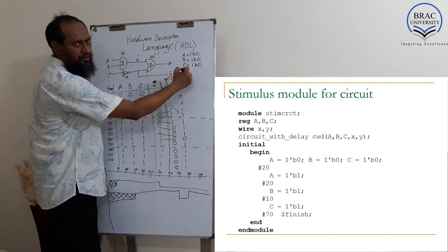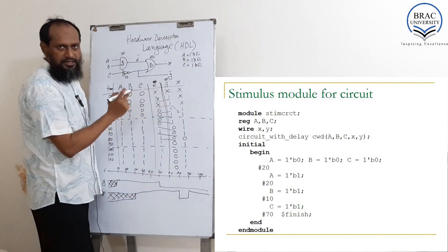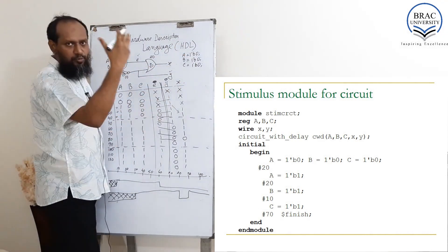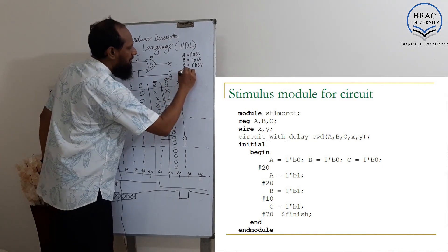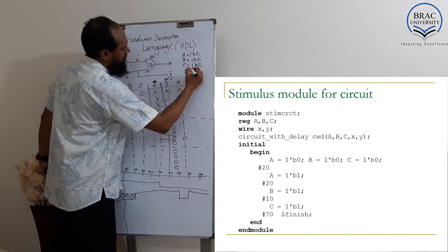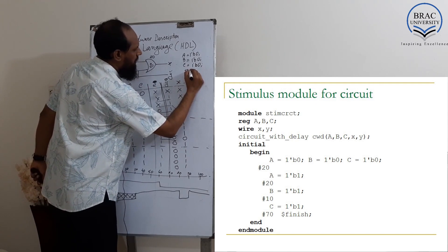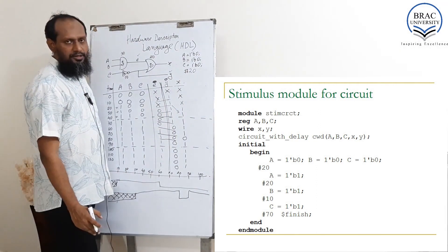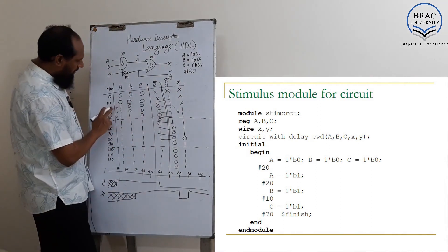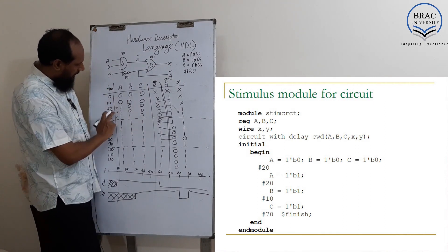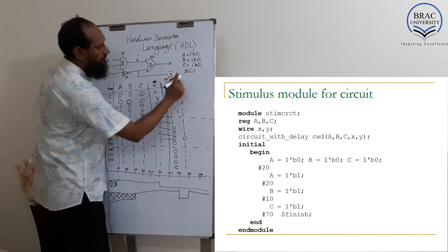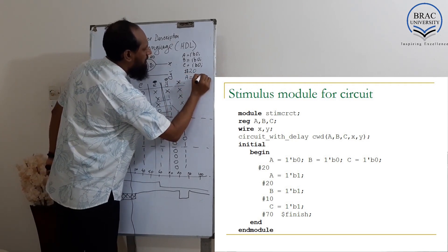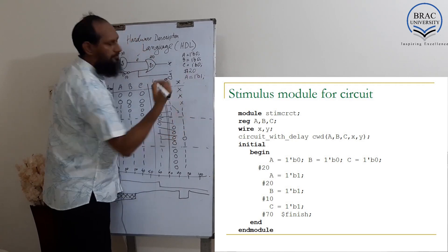That means we have to use a delay. This input will be continued till 20 nanoseconds, so we provide a delay here. We can say 19 or 20, whatever you think - we use 20 nanoseconds. No semicolon is required. Then we just changed the value of A. B and C remained the same, so only we change A equal to 1 bit as 1.